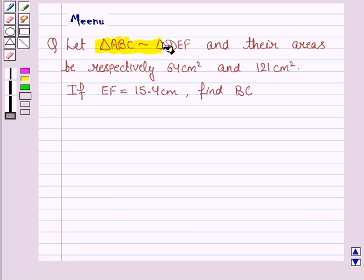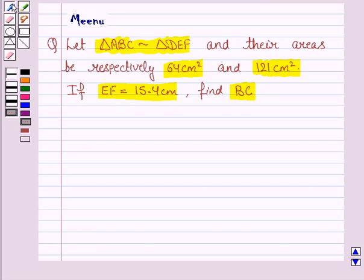let triangle ABC be similar to triangle DEF and their areas be respectively 64 cm² and 121 cm². If EF is 15.4 cm, find BC.